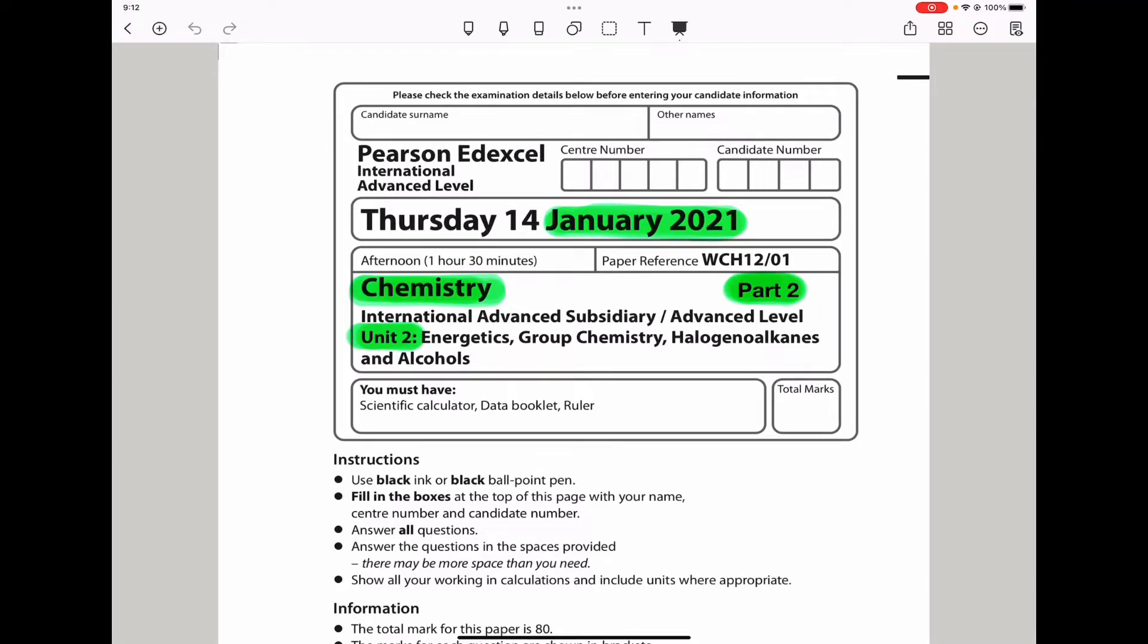Welcome to the Chemistry, Biology, and Math Revision Hub. Today we are doing the Pearson Edexcel International A-Level Chemistry Unit 2 for January 2021. This is the part 2 video. I'll put the link to the part 1 as well as the part 3 video below the discussion box. Let's begin with question 19.